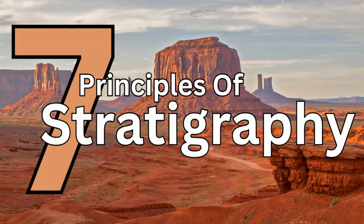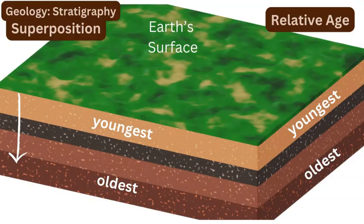In total there are seven principles of stratigraphy. The first principle is called superposition. It's very important because it lays the groundwork for all the other principles. The layer of rock right by the surface is the most recently deposited layer. As you go down deeper, each layer gets older. Every rock layer deeper than the previous one is older — this is superposition, and it is the basis for stratigraphy.